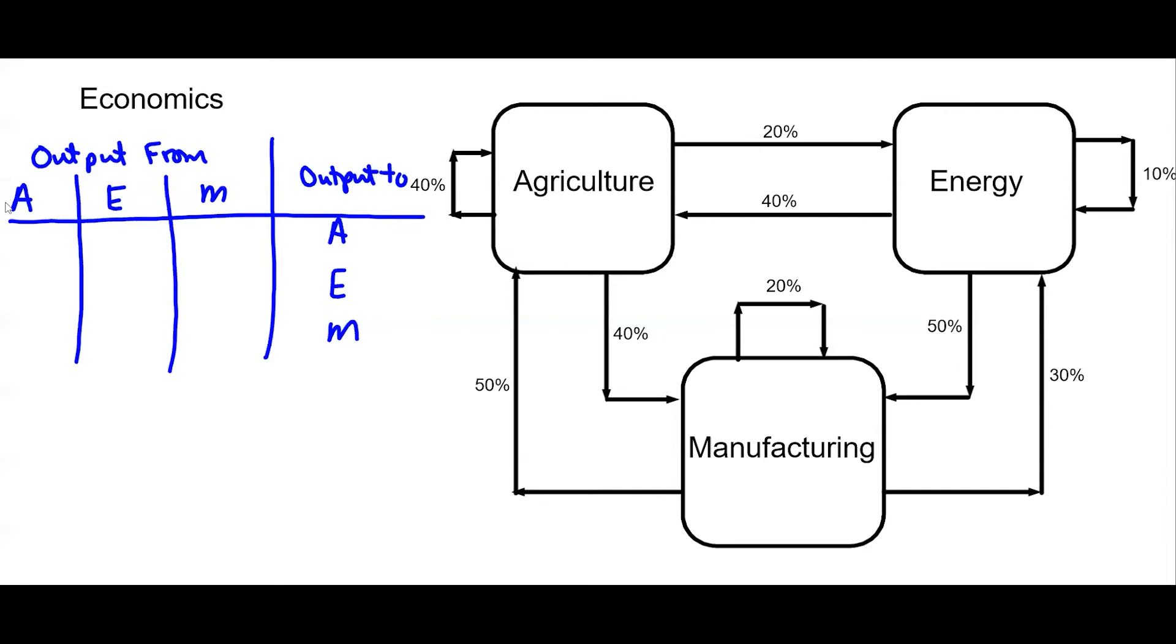So let's look at output from agriculture. So output is 20 percent to energy, I'll put 0.2 for 20 percent. 40 percent to manufacturing, so we'll get a 0.4. And it keeps 40 percent, so 40 percent goes to itself.